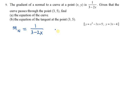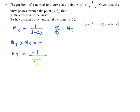So how to find dy/dx? dy/dx is actually your gradient for the tangent. We have discussed that tangent and normal are perpendicular, so gradient for tangent multiplied by gradient for normal equals negative 1. Therefore, gradient for tangent equals negative 1 divided by the gradient for normal, which is 1 over 3 minus 2x. So gradient for tangent equals 2x minus 3. This is actually your dy/dx.